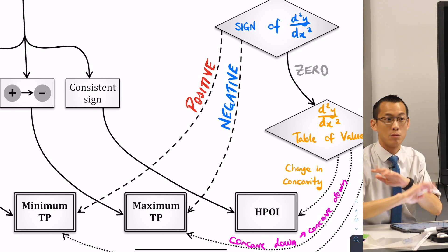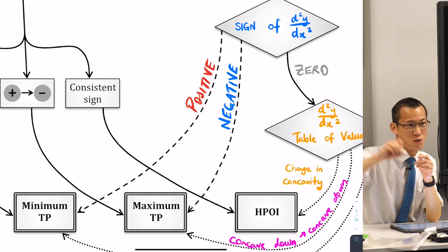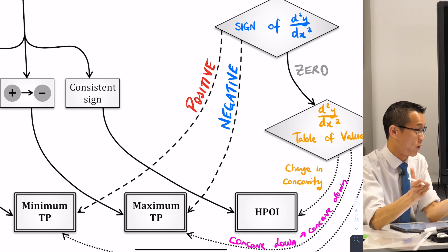Or it's negative, done, it's a maximum, no table of values required. I don't like tables of values, they're time-consuming, I've got to draw stuff, I've got to put in lots of substitutions and all the rest. If I can avoid them I will.